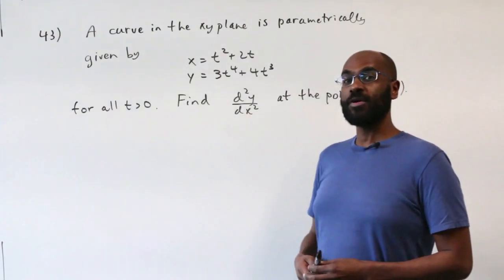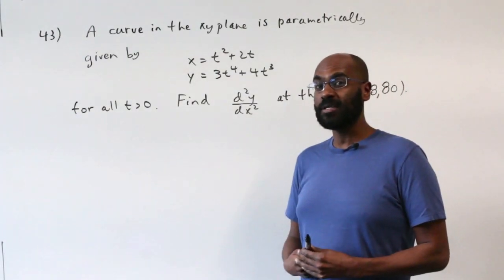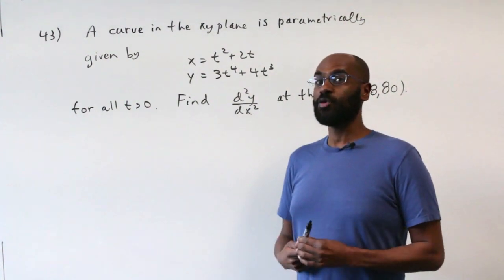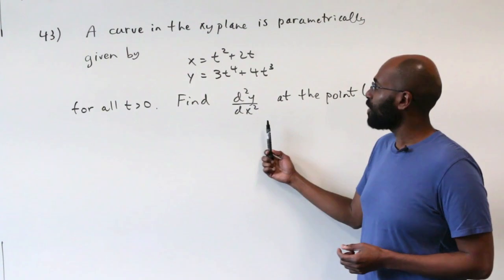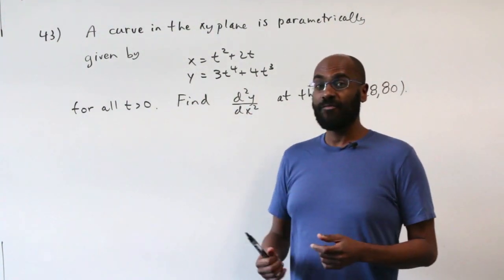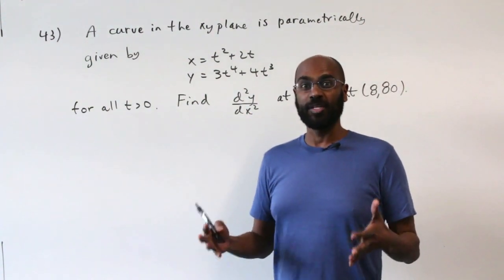Problem 43 on the current GRE Math Subject Test Practice book was only answered correctly by 27% of test takers. It's a problem involving a second derivative and a parametric curve, so let's dive in and figure out what the issue was on this problem.